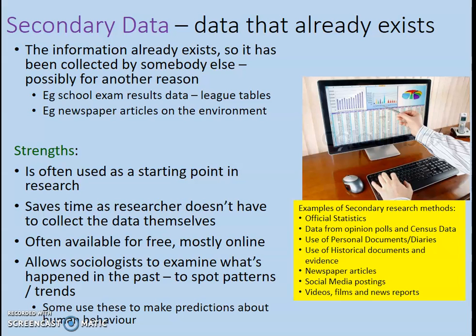Historical documents also include newspaper articles, since once an article is written it becomes part of history. Social media posts are another secondary data source — you could analyse friends' Instagram or Facebook posts to see how many discuss the environment, sexism, or particular types of views. Data doesn't only mean written text or statistics; it also includes videos, films, and visual news reports.